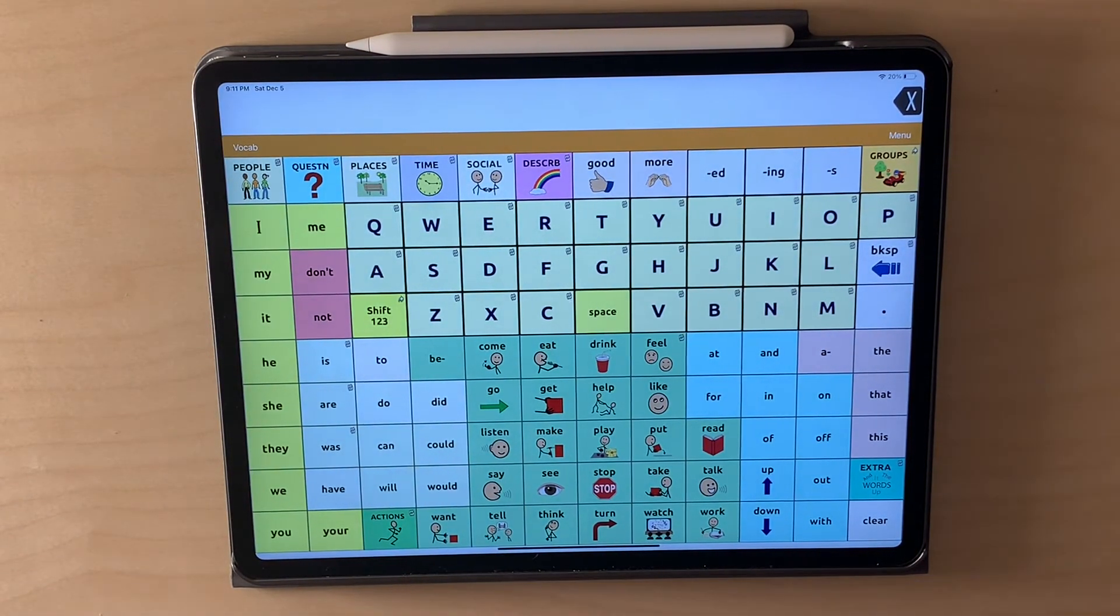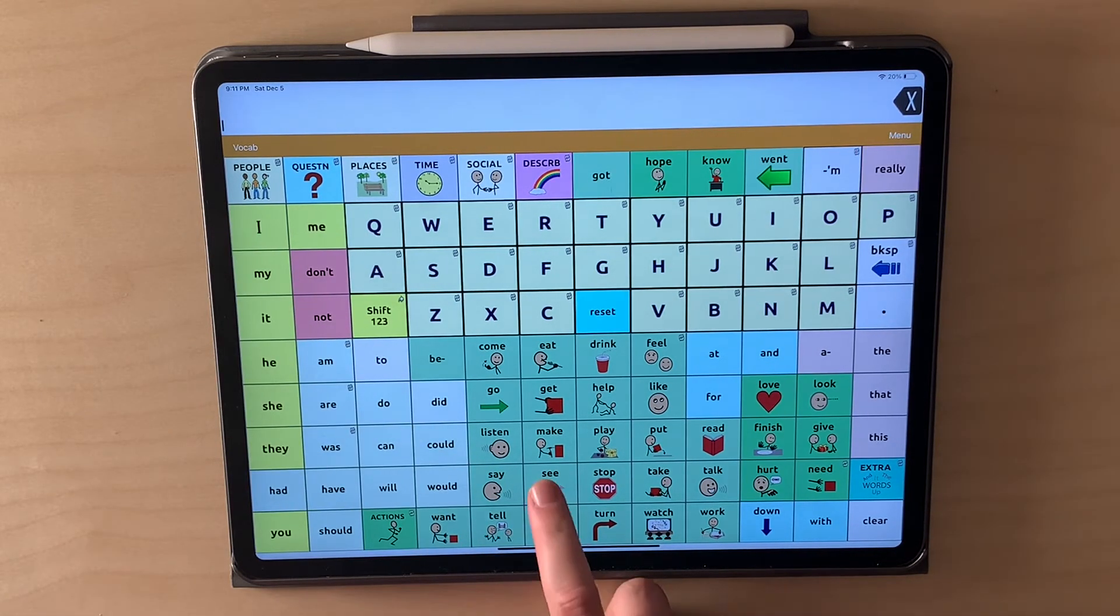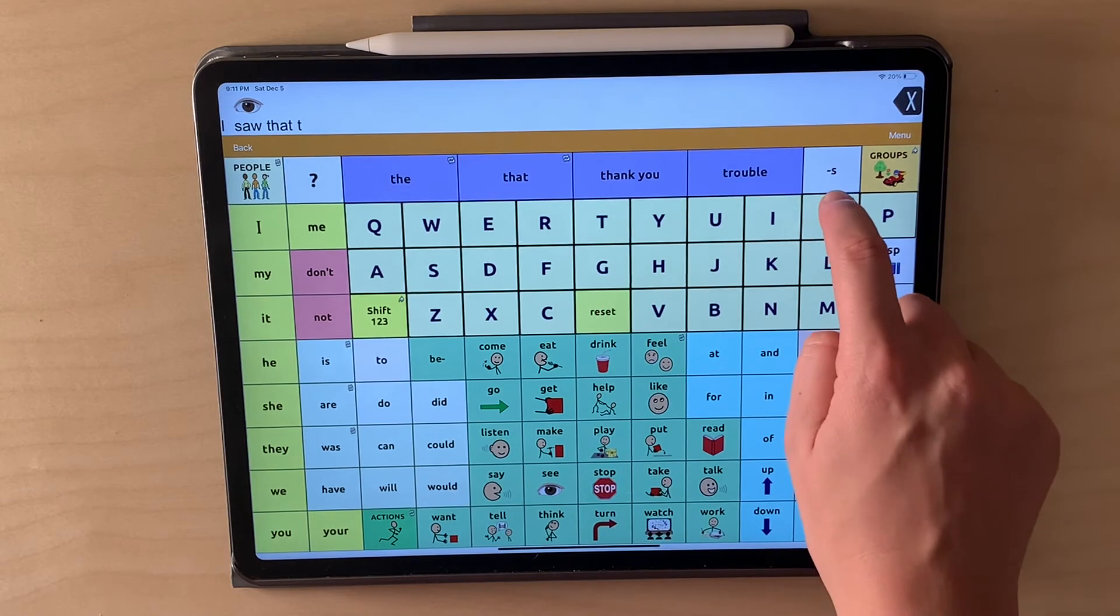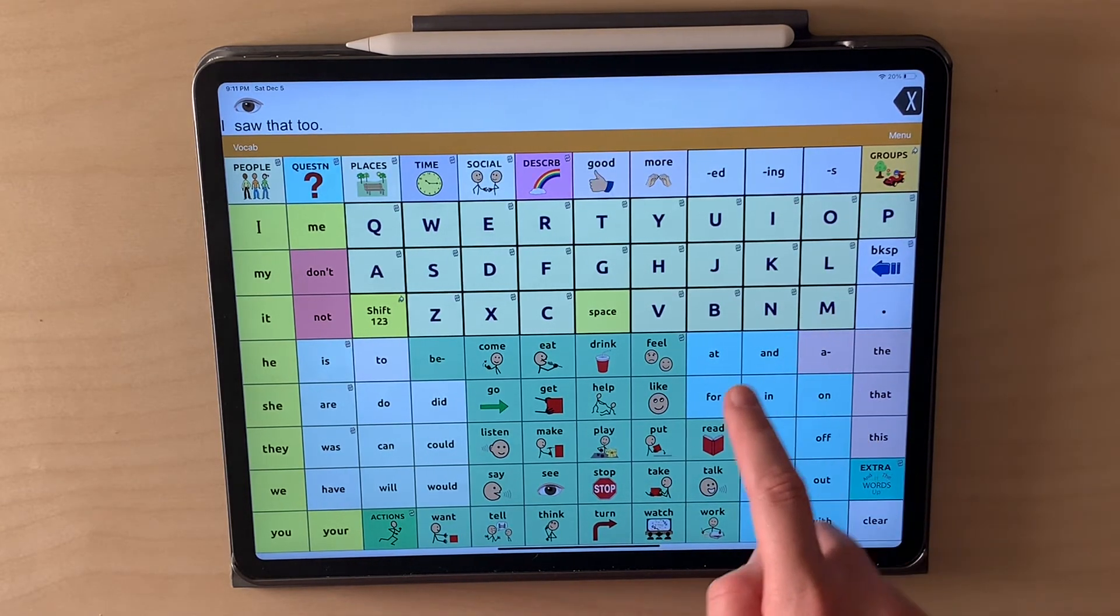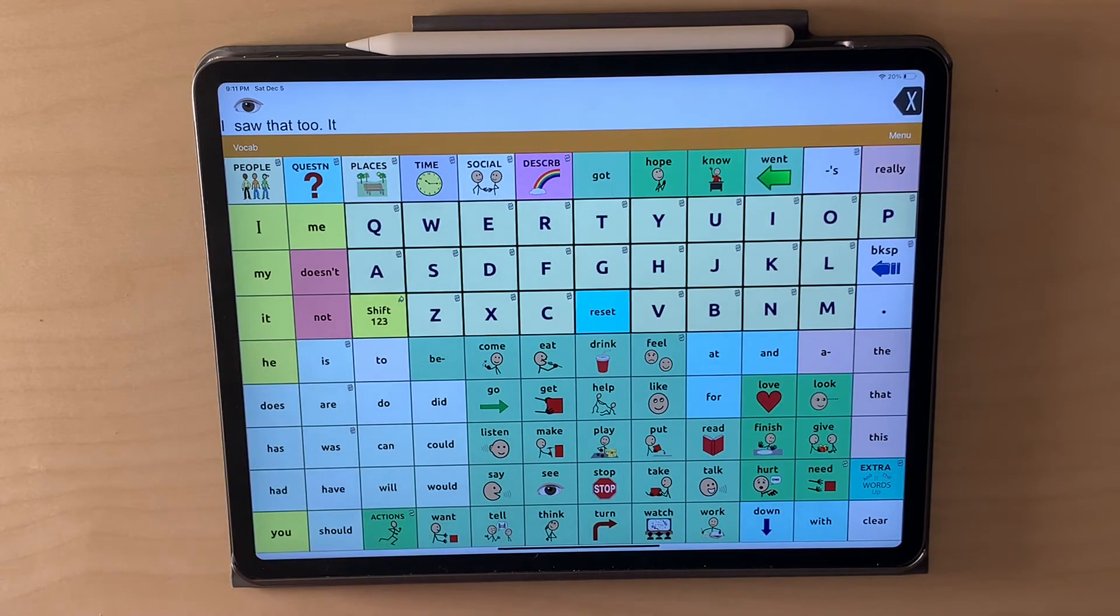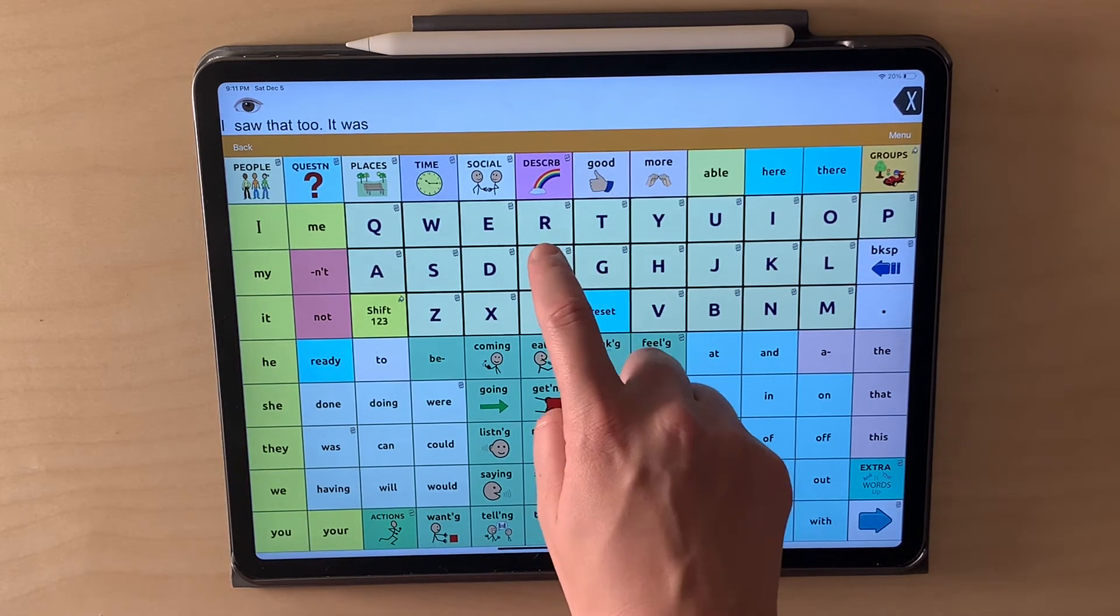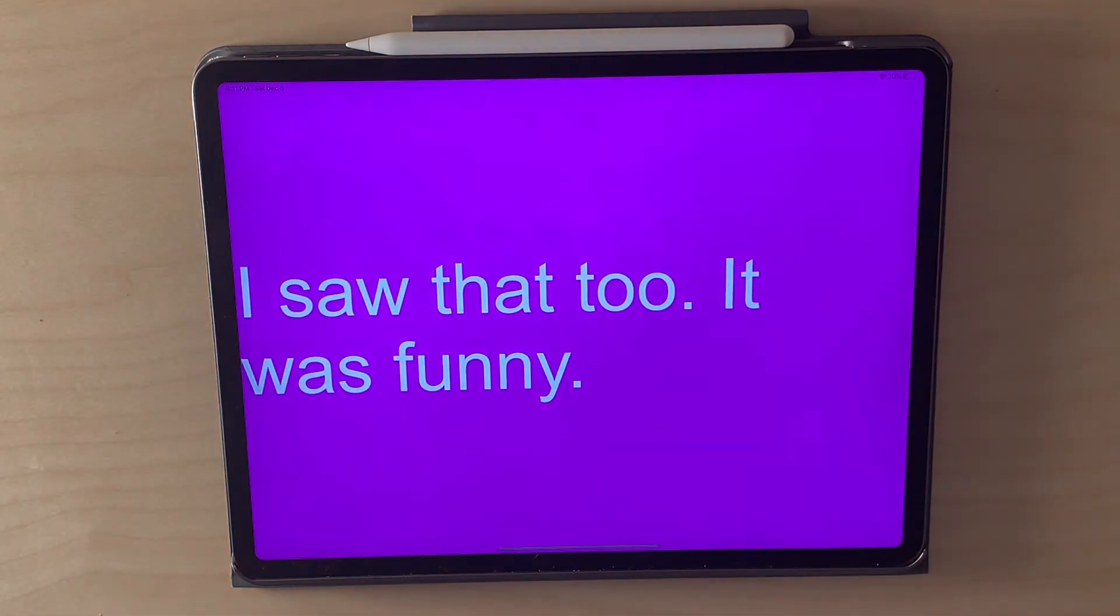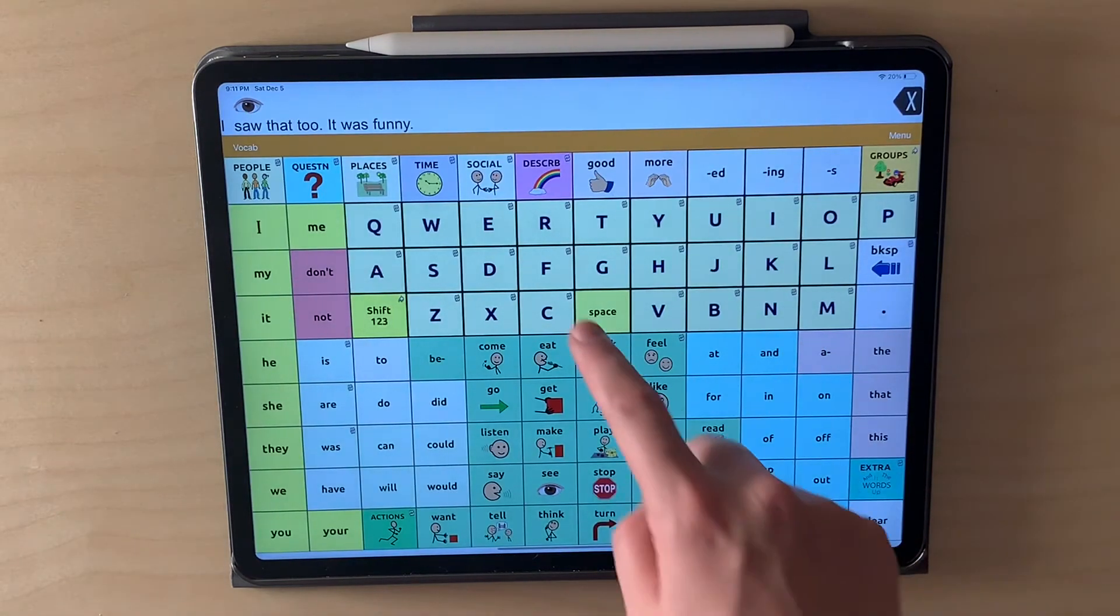And we want to talk about something that happened. Maybe people are talking about a video they saw on YouTube and you saw that video too. You could say I see, but we want to do past. Saw. I saw that too. And then I could say it was. And then maybe I just want to type it. It was funny. I saw that too. It was funny.